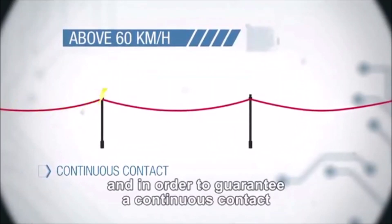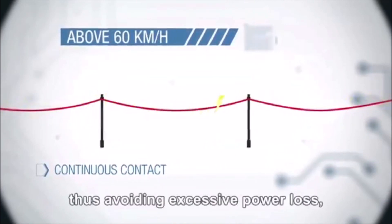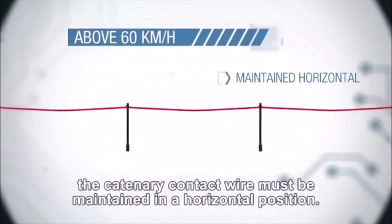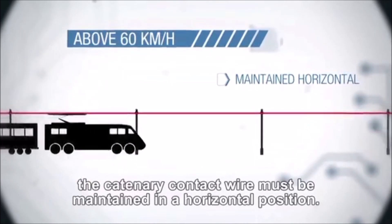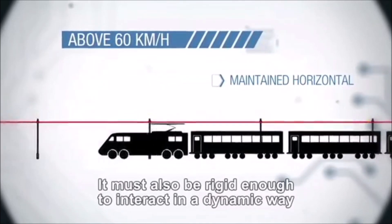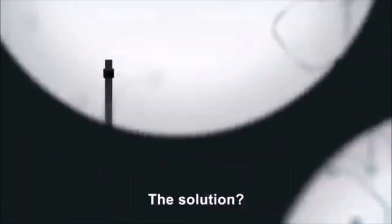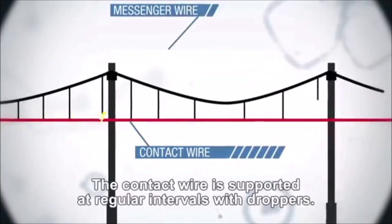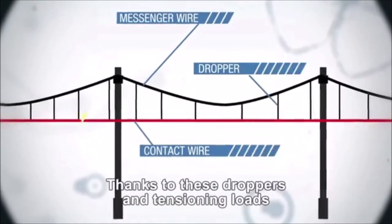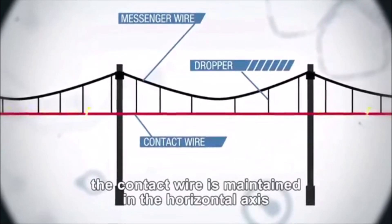The overhead line cables are so heavy that when suspended between two points they do not form a straight line but sag due to their weight. For speeds above 60 km/h, to guarantee continuous contact between the catenary and the pantograph head and avoid excessive power loss, the catenary contact wire must be maintained in a horizontal position. It must also be rigid enough to interact dynamically with the pantograph.